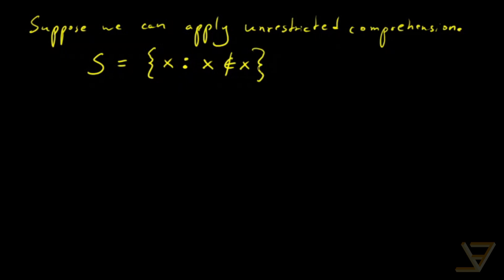This might seem innocent at first but it leads to a contradiction because there are two possibilities now. Either S is an element of S or S is not an element of S. Let's check out the two possibilities.